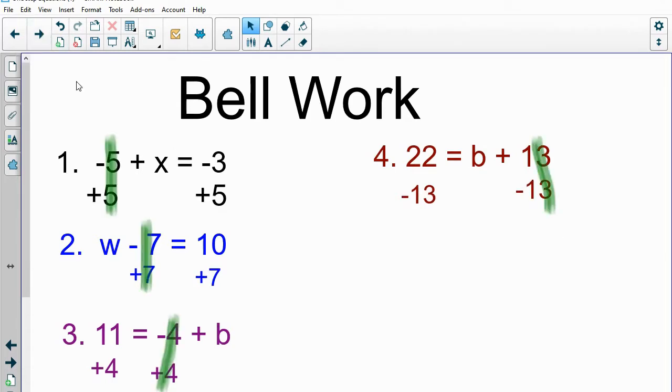And when we do this, the portion where we have -5 + 5 or -7 + 7, those are eliminated, leaving us with just x equals whatever the final calculation is. So let's look at that first one. -3 + 5 is 2, so number one would be x = 2.